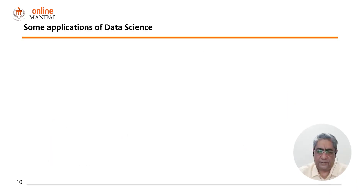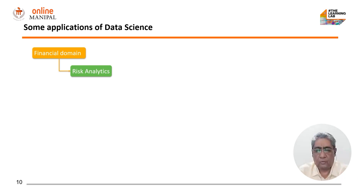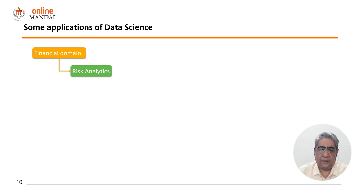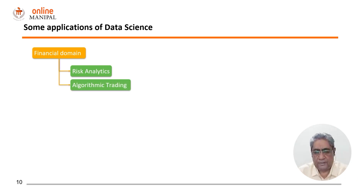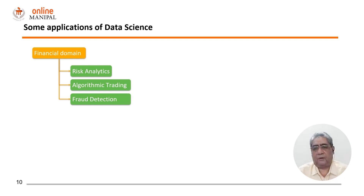Next, we look at some applications of data science. In the financial domain, risk analytics is one area that uses a lot of data science and predictive analytics modeling — assessing the risks of providing loans and services to certain customers, the probability of recovering loaned money. Algorithmic trading is another area that uses predictive analytics models extensively. Fraud detection — identifying fraudulent transactions and controlling them before they happen — are some of the key problems the financial industry is looking to solve using data science principles.